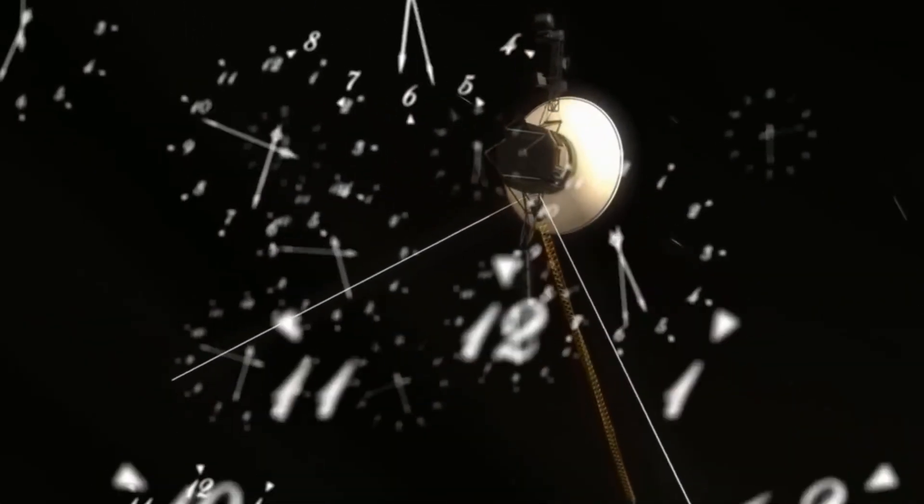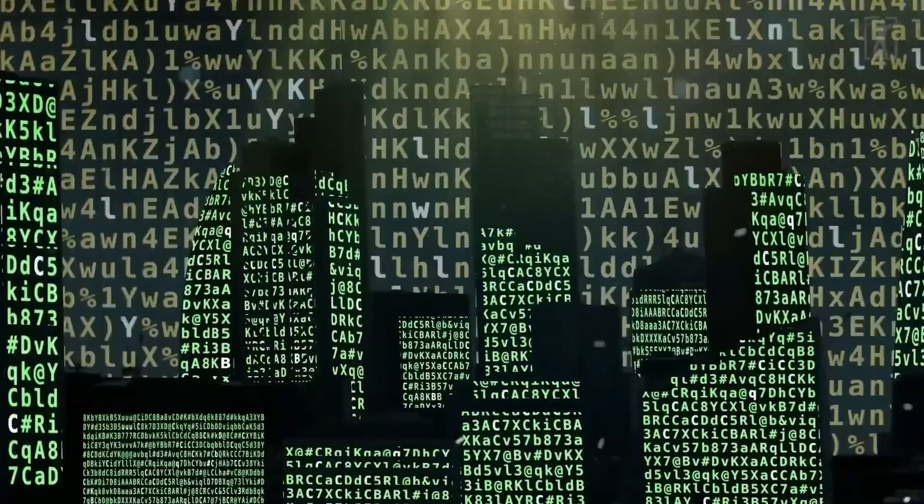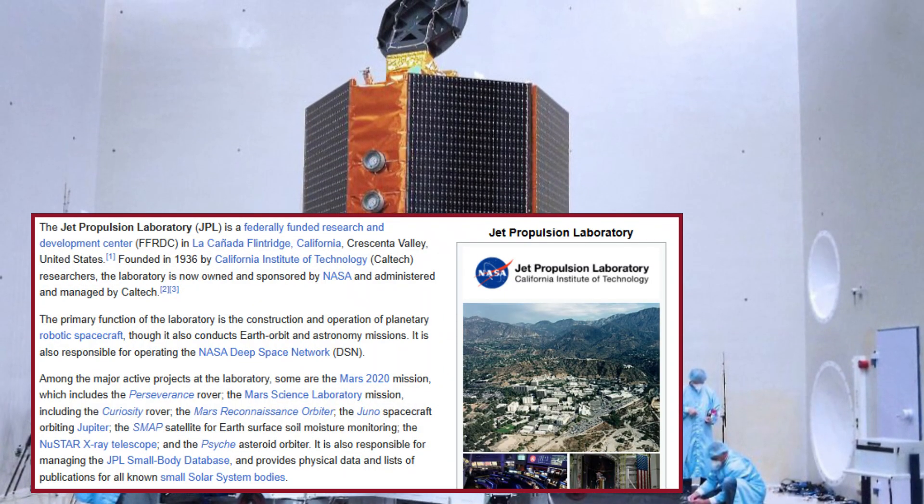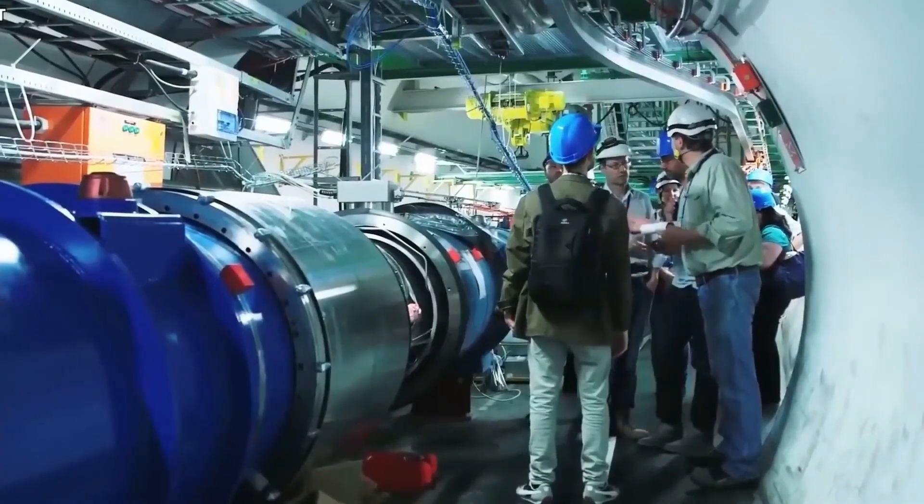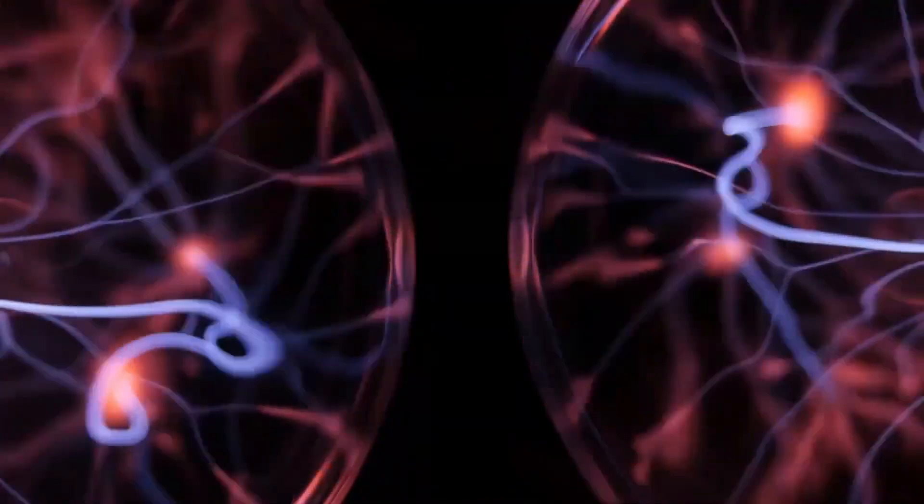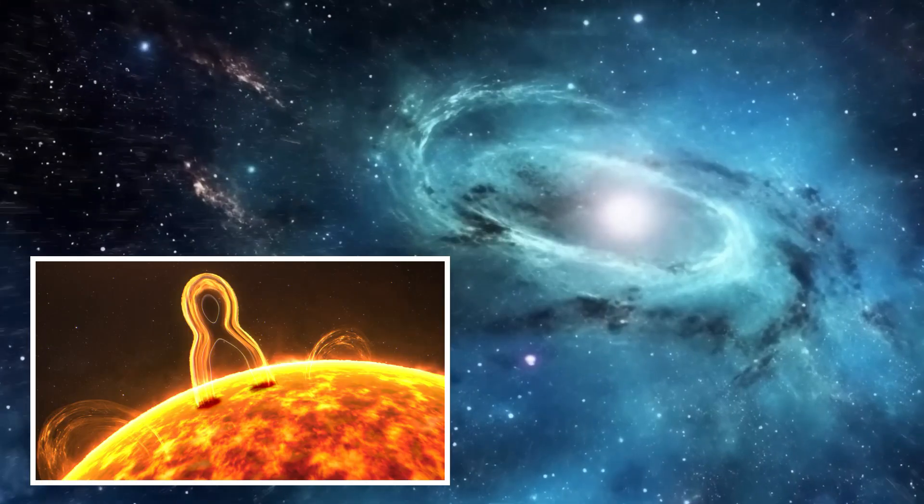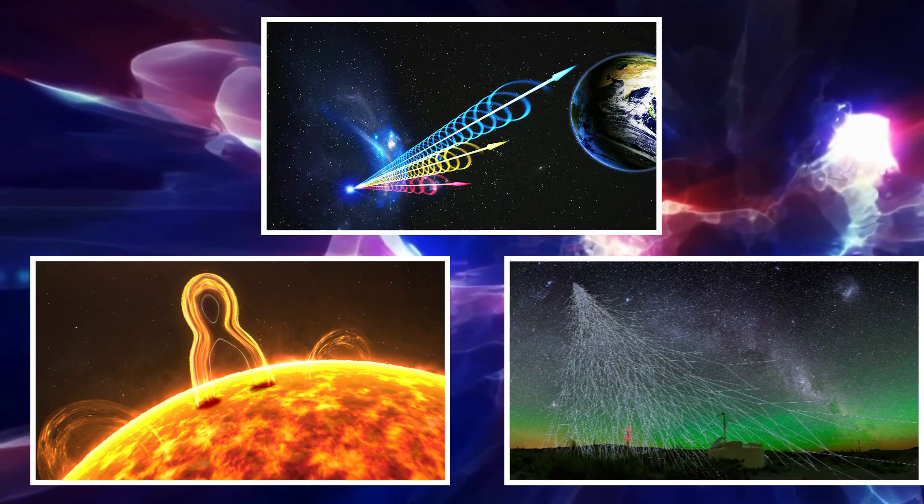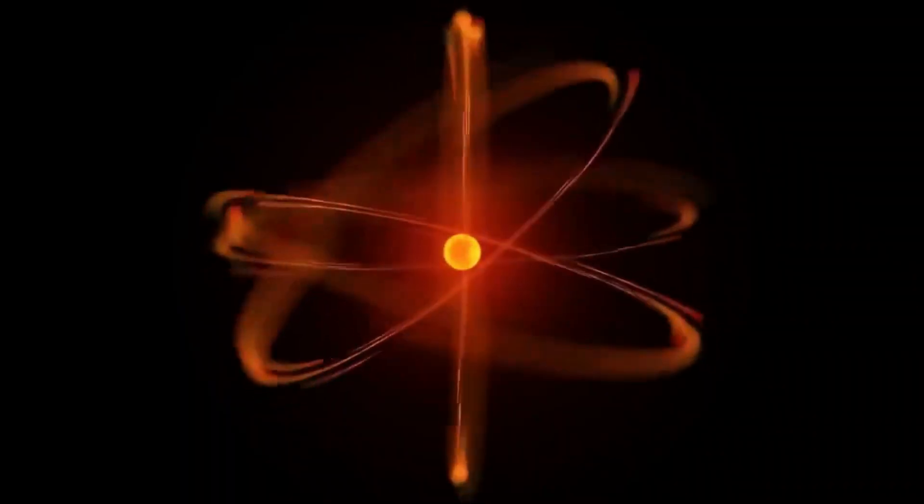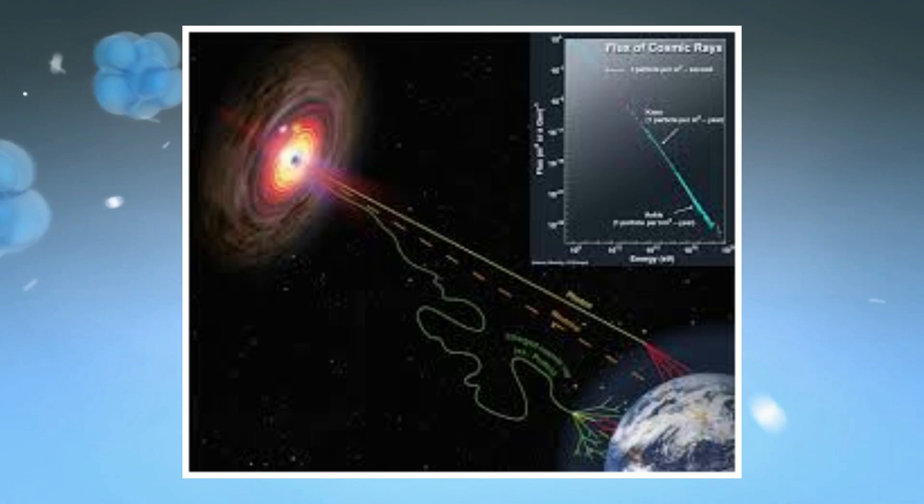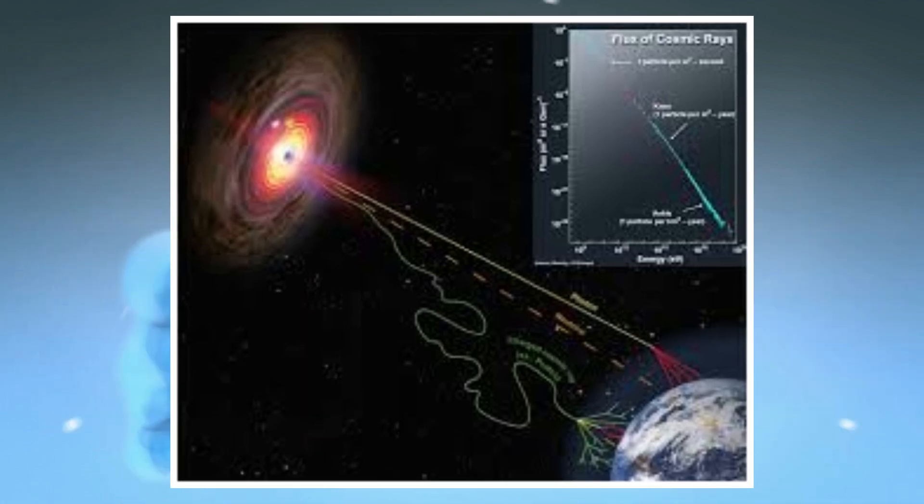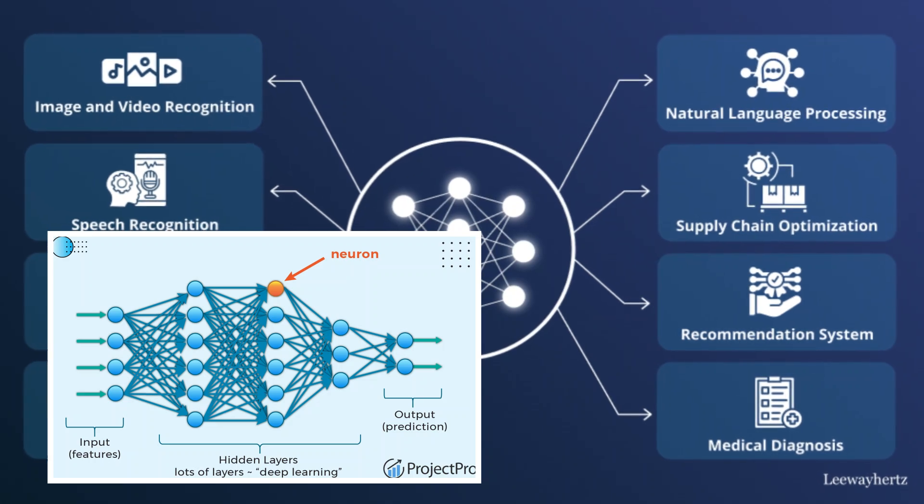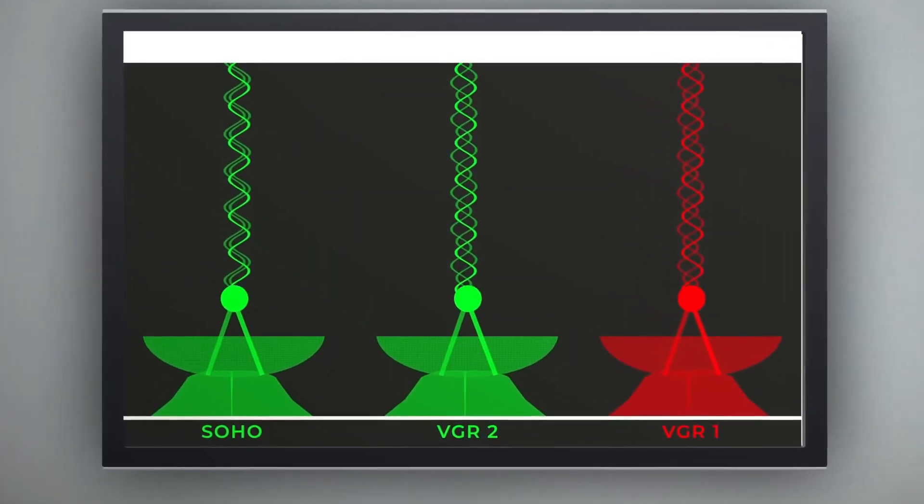The first step is digging into Voyager 1's decades of transmissions. Scientists are now scanning all past signals for any similar patterns that might have gone unnoticed. Since Voyager 1 has been sending interstellar data for over a decade, it's possible that this anomaly has appeared before but was overlooked. NASA is also coordinating with Voyager 2, its twin probe, to see if anything similar has ever appeared in its transmissions. Voyager 2 is still active and moving in a different direction through space. If it detects anything remotely similar, that would be strong evidence that this isn't a random glitch. It's a real phenomenon.